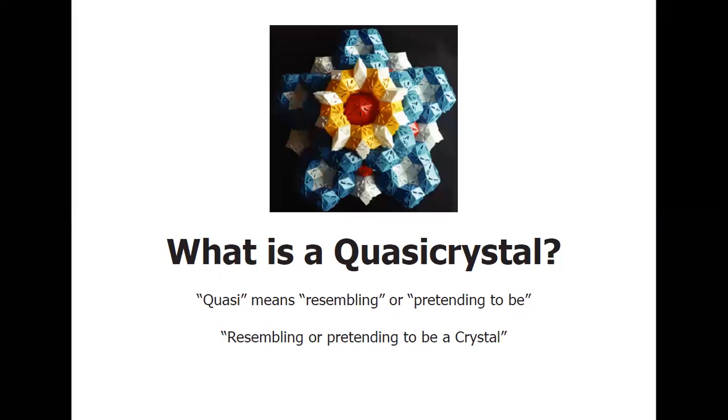The first question that we would have in mind is what exactly is a quasicrystal? You can get a rough idea from understanding the meaning of the word quasi. The Macmillan Dictionary defines this term as pretending to be or resembling. So along with the suffix crystal, we get that the word quasicrystal means something that resembles or pretends to be a crystal.